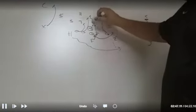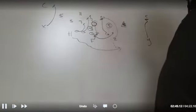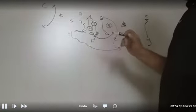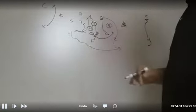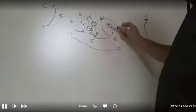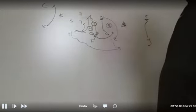Fullback, you're going to read the block of the center and the guard here. Basically, you're going to read the action key, which is the first guy to the inside of the read key. Read key's here. You got the first man inside. That's your read.